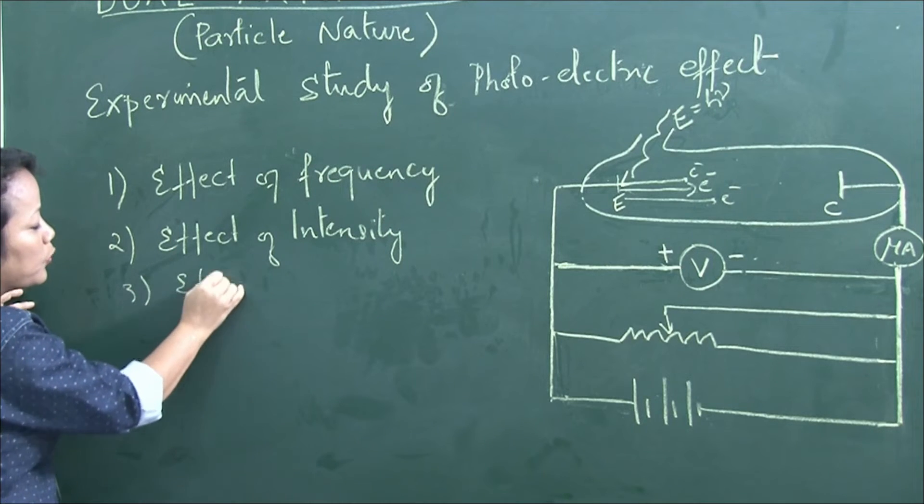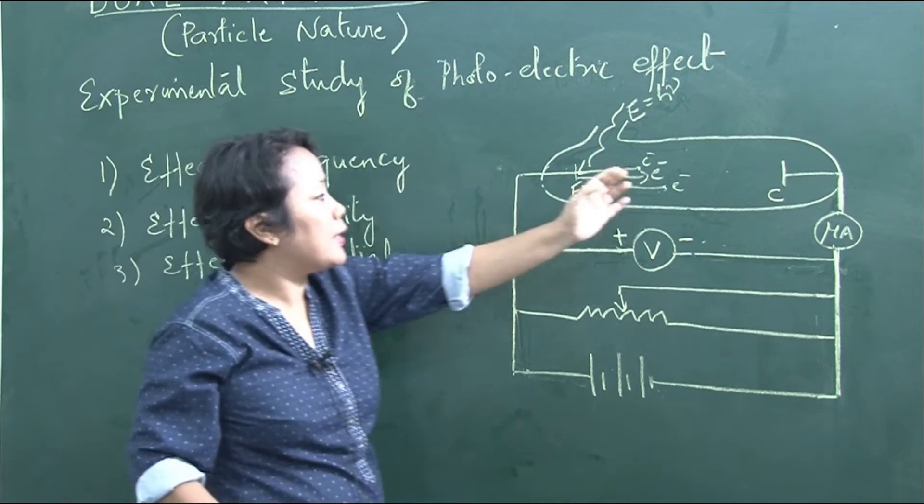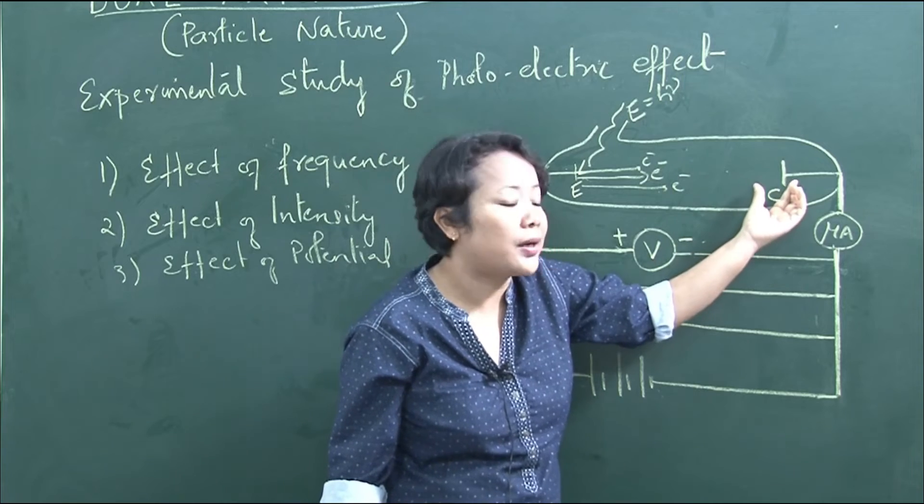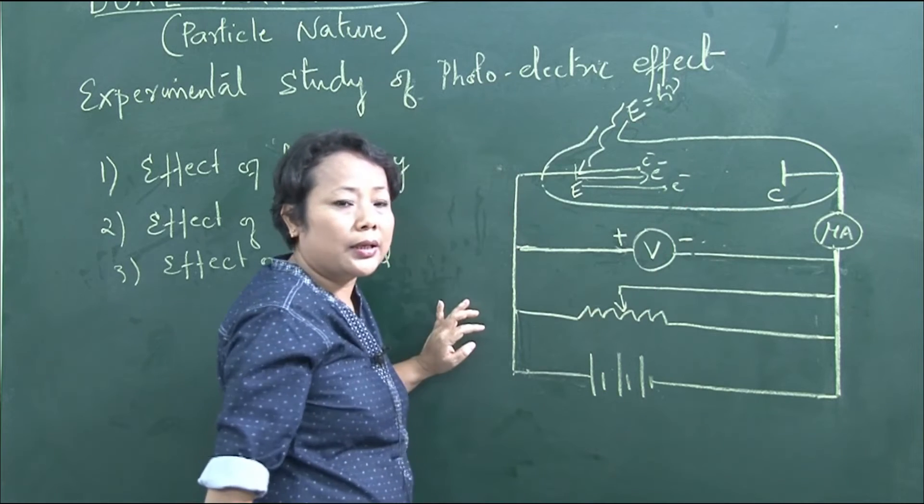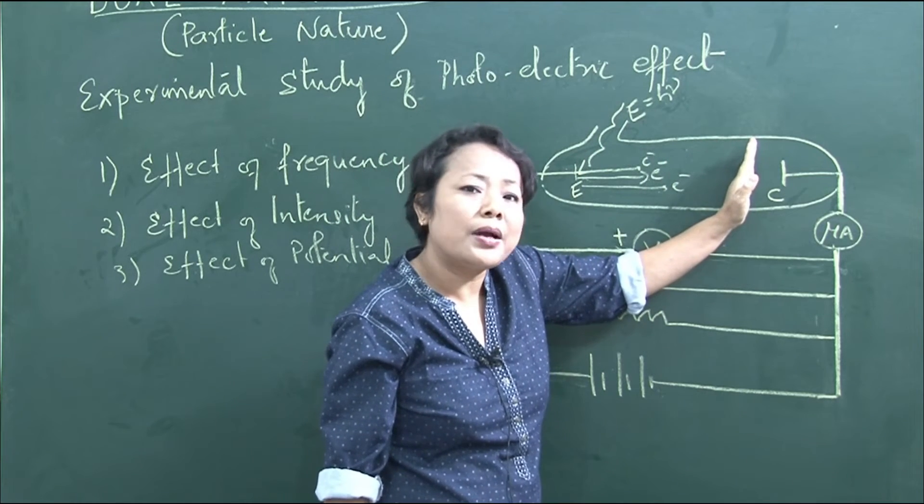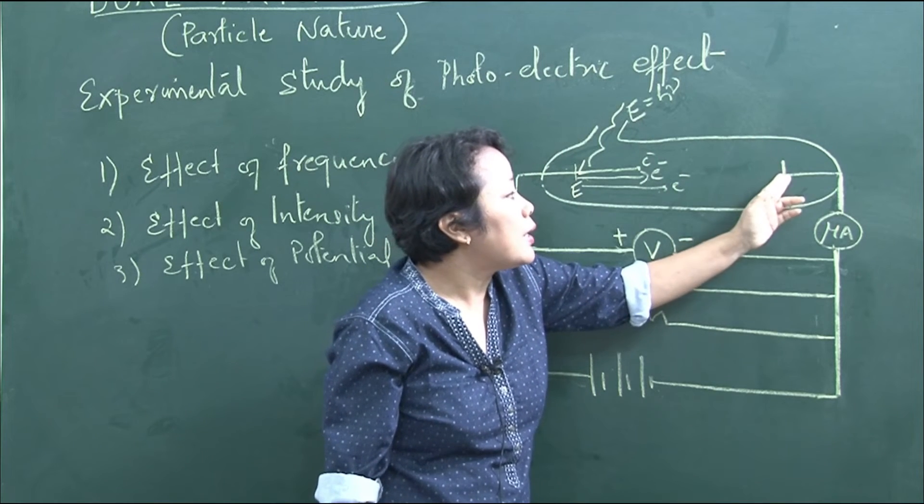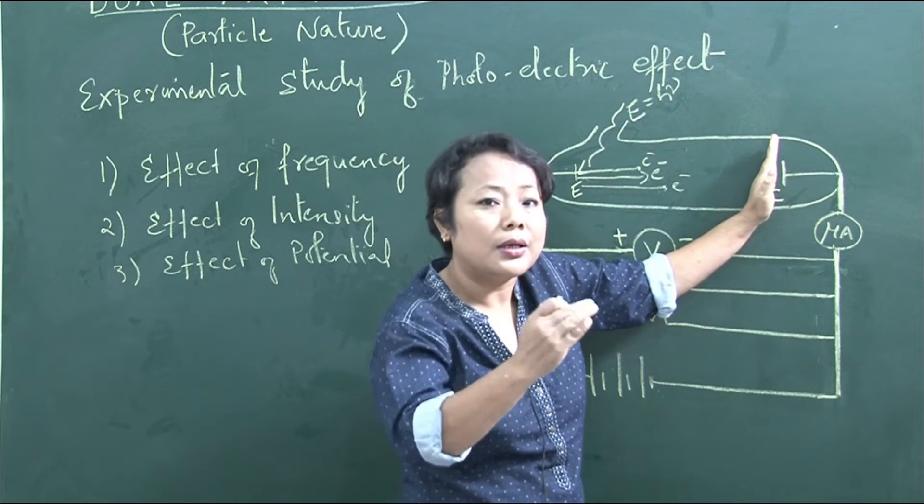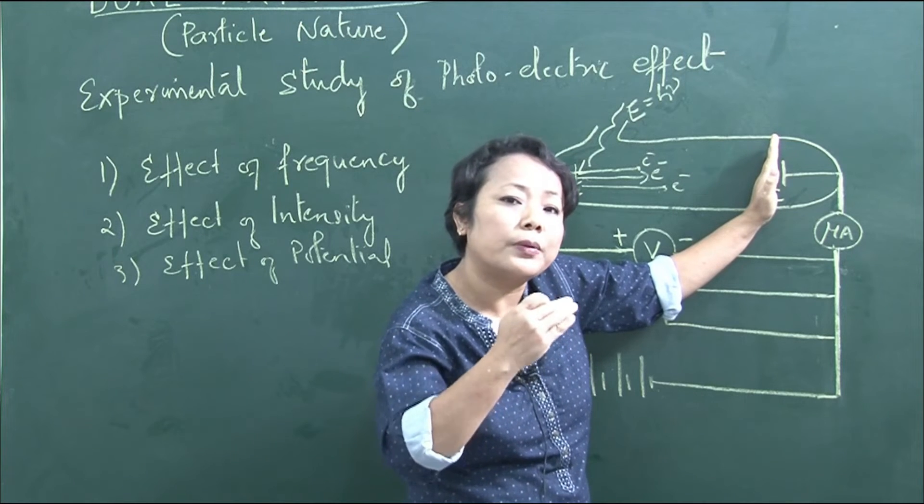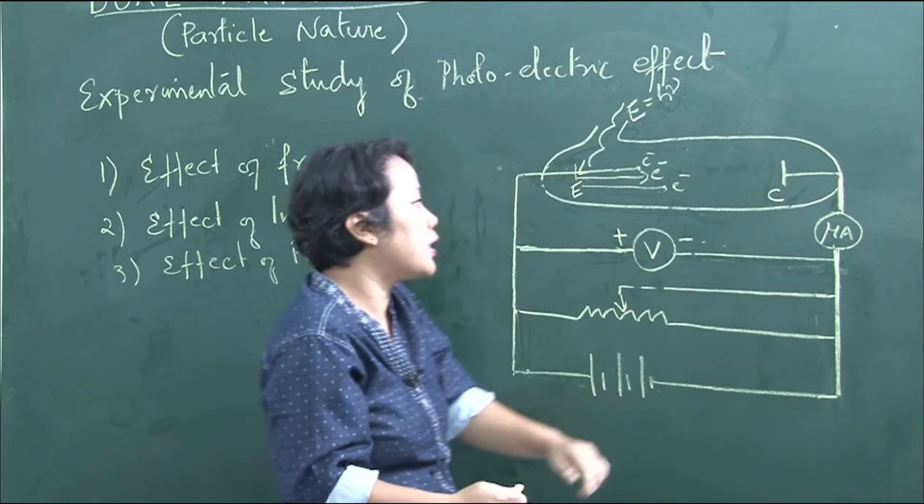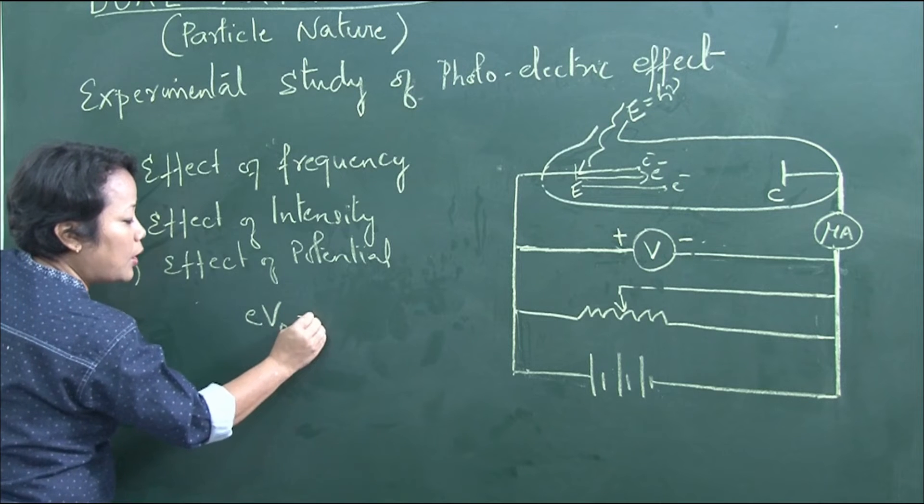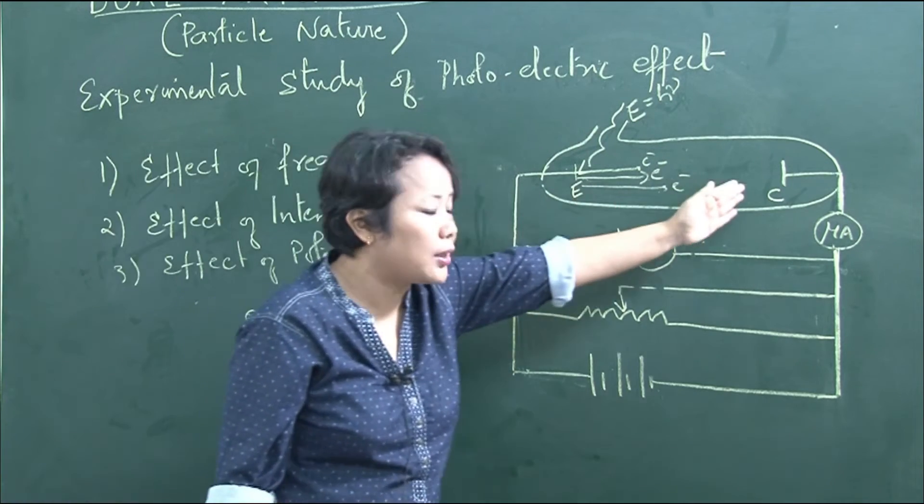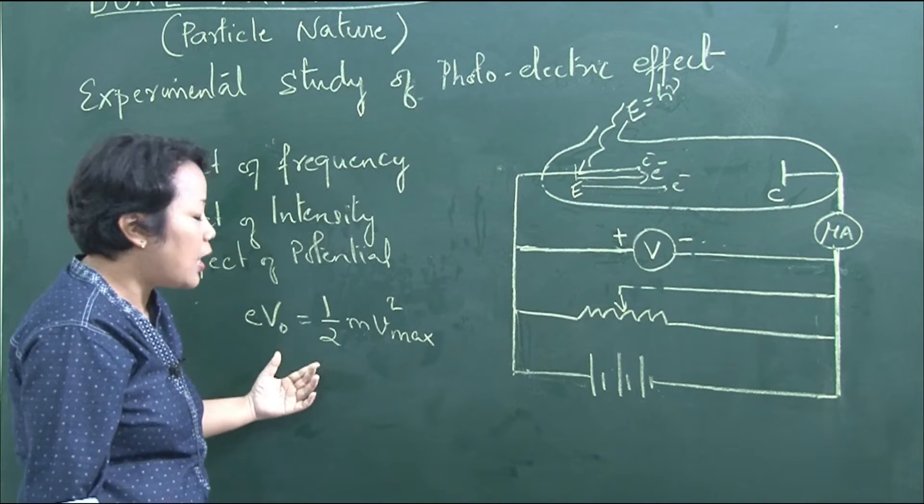Effect of potential: A negative potential repels the photoelectrons, which are negatively charged particles. Electrons are emitted with kinetic energy, but the negative potential creates electrostatic repulsion. The stopping potential is the potential at which photoelectron emission stops, related to the maximum kinetic energy: half m v squared maximum.